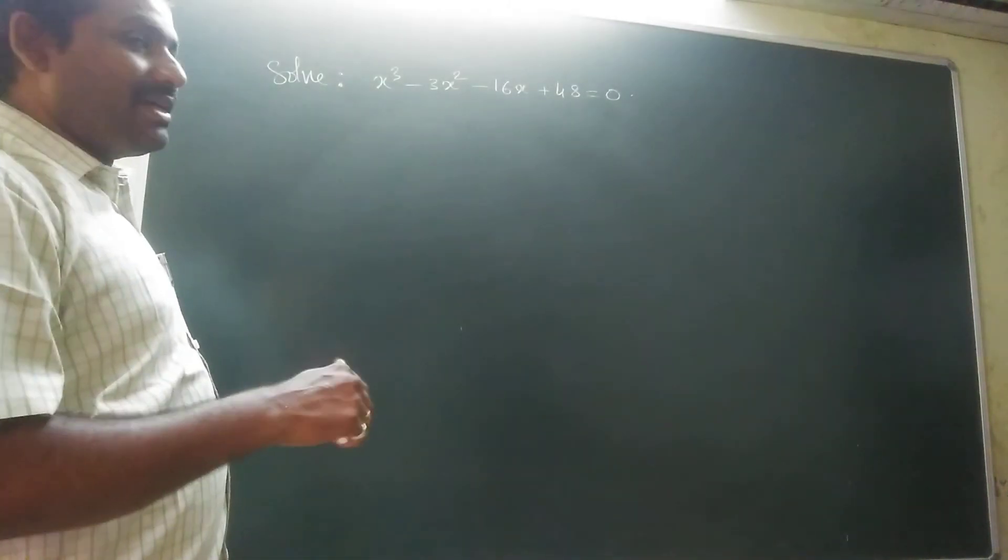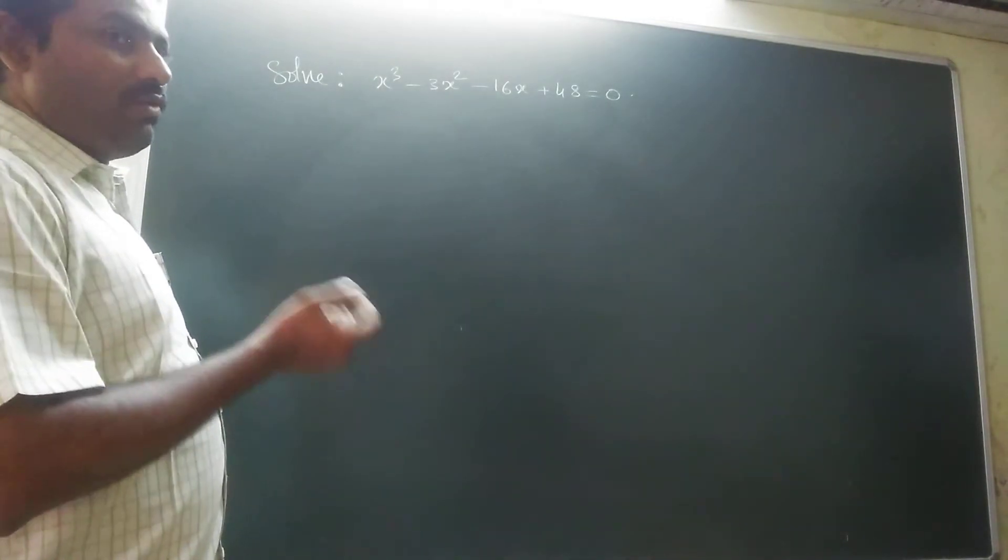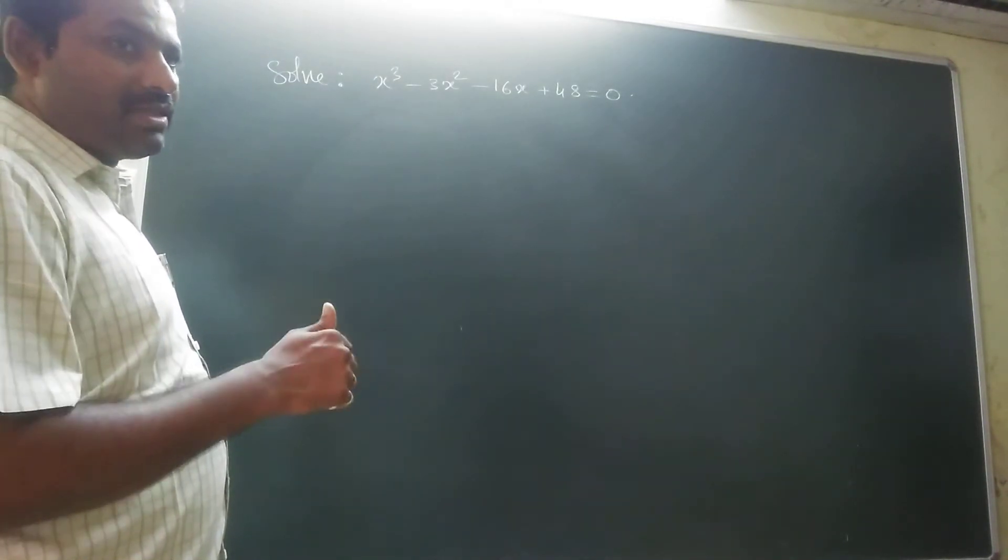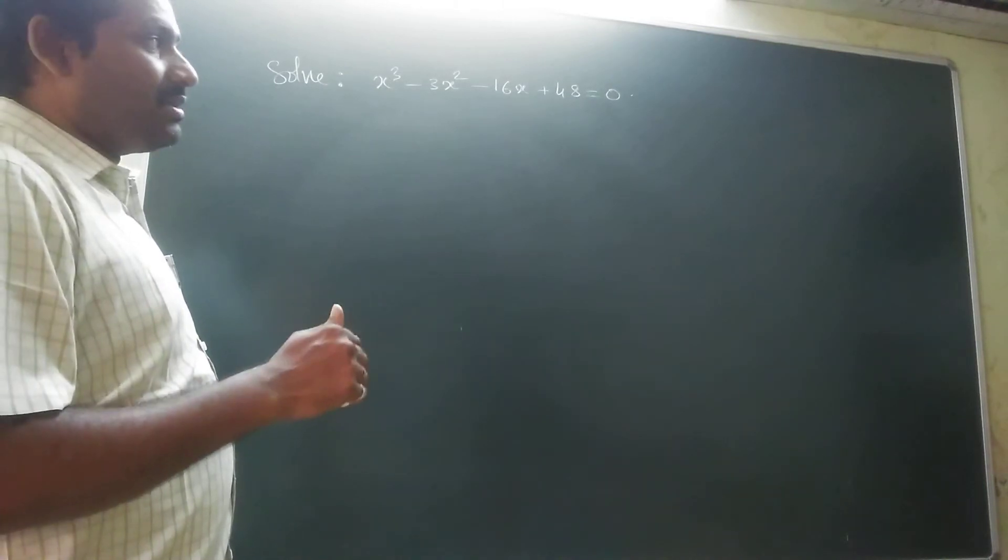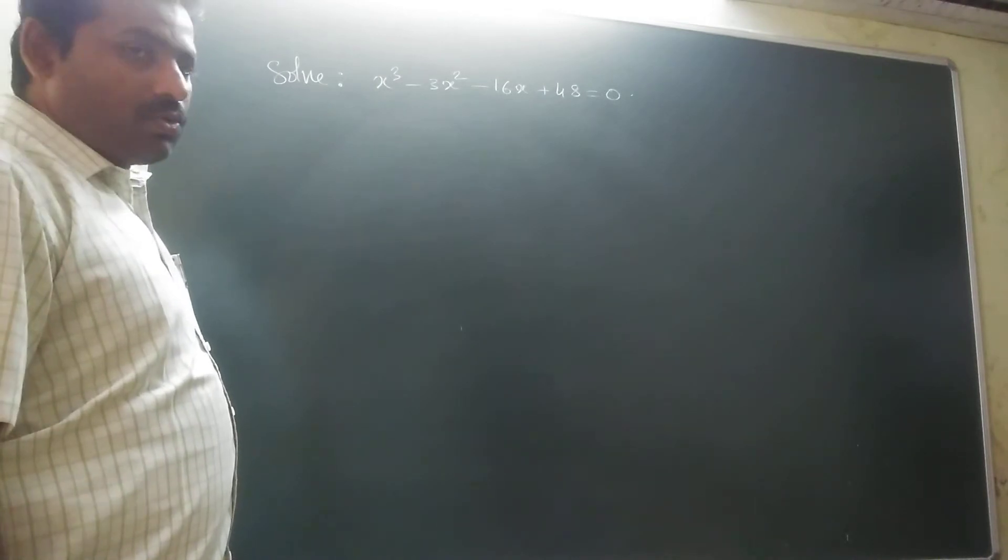One thing is we have to guess one root. By putting 0, 1, 2, 3, minus 1, minus 2, minus 3, like that. By putting those values we can find that one root.